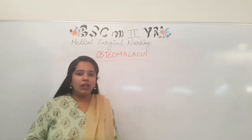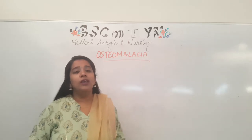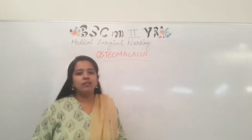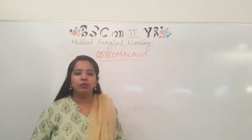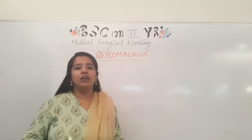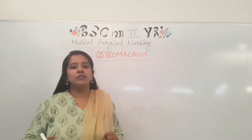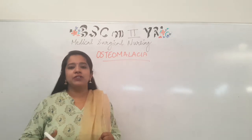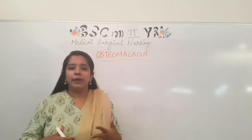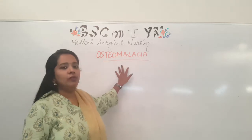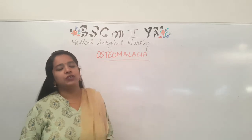Osteomalacia is a softening of bone which leads to damage of the bone tissues. The bone becomes soft because of the deficiency of calcium, particularly the deficiency of vitamin D. Therefore, the bone is soft and starts to degenerate or break down. Deficiency of vitamin D leading to the softening of the bone is called Osteomalacia.